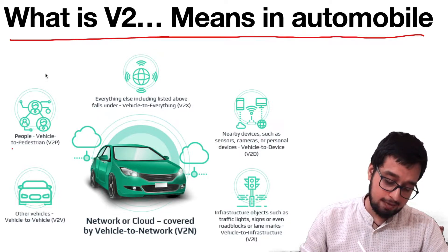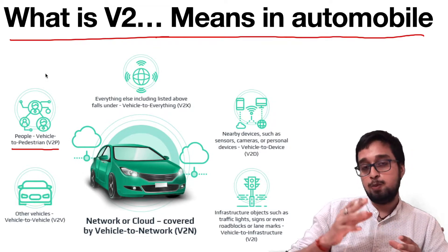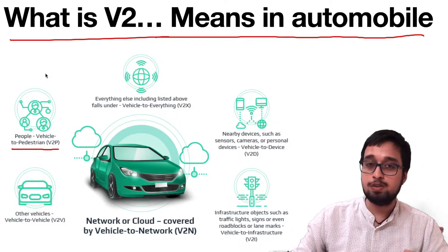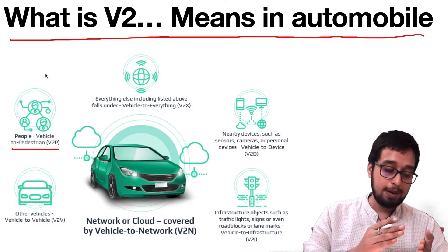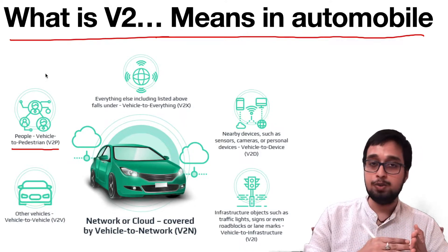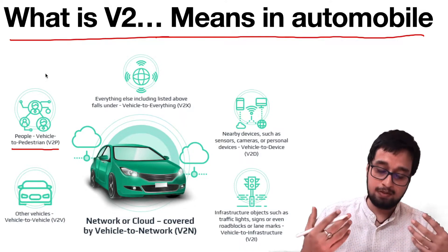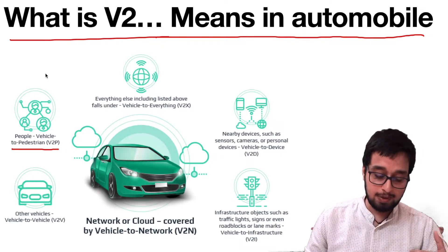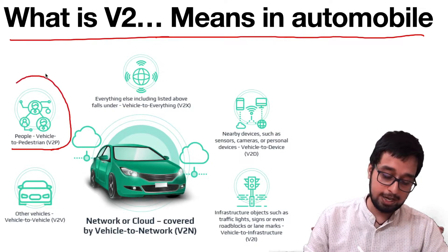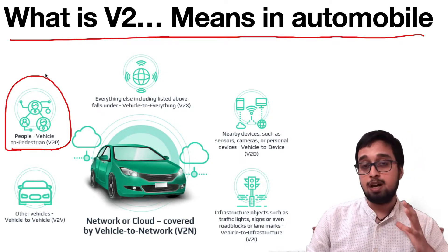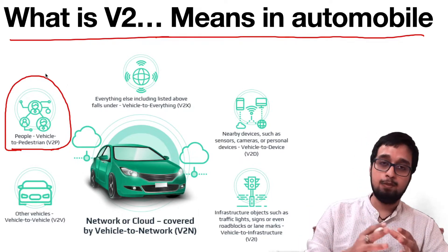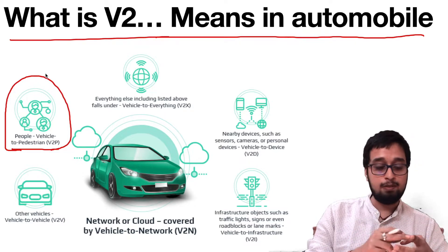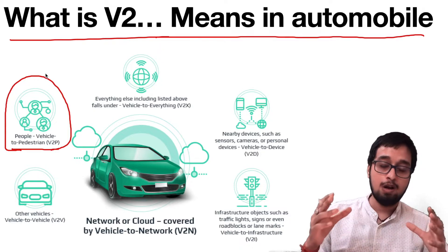The first one is V2p. V2p is basically vehicle to pedestrian — pedestrians are persons who are driving or walking on roads. If you are talking about the safety system, pedestrian deaths are basically due to negligence or ignorance from the vehicle's owner, and we have seen a great number of pedestrian deaths. That's why in the coming future your vehicle will be communicating with pedestrians, alarming you and the pedestrian if a vehicle is approaching, and alerting you to slow down if a pedestrian is nearby.